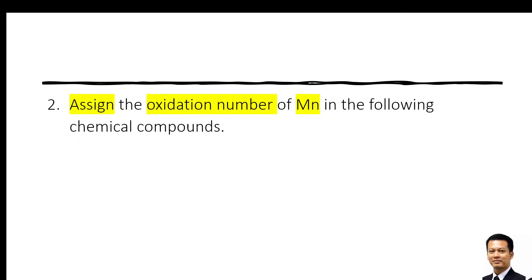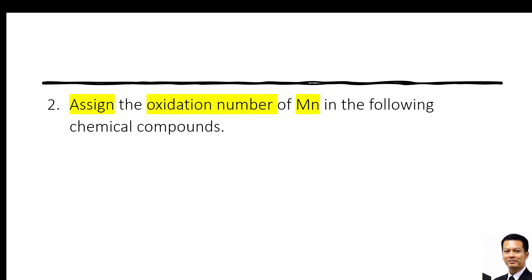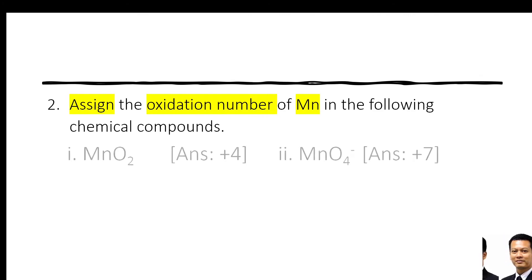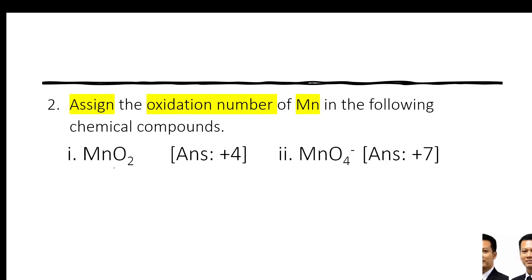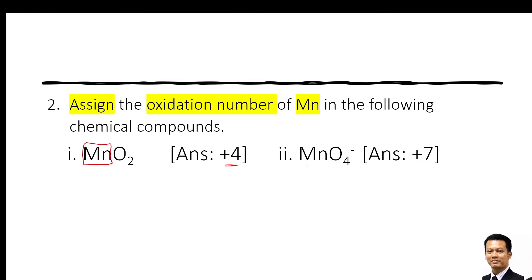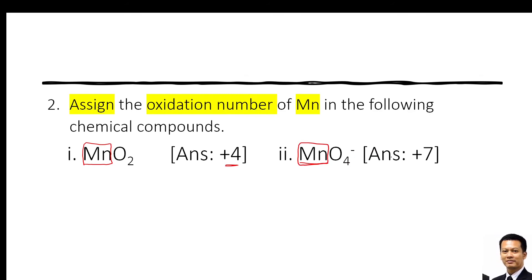One more exercise: assign the oxidation number for manganese in the following chemical compounds. How can we get the oxidation number for Mn in MnO₂? That is +4. And how can we get the oxidation number of Mn in MnO₄⁻? That is +7. Let's try to calculate.